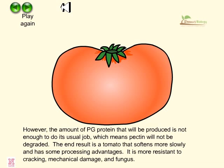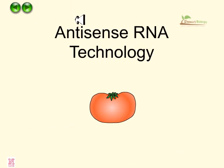However, the amount of PG protein produced is not enough to do its usual job, which means pectin will not be degraded. The end result is a tomato that softens more slowly and has processing advantages — it is more resistant to cracking, mechanical damage, and fungal infection. This is all about the antisense RNA technology.